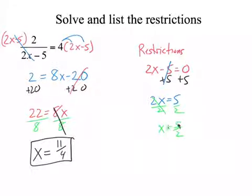5 over 2 is a restriction, meaning it would be error. If this was 5 over 2, it would be an error and we have no answer. But since it does not, the restriction doesn't affect this, we're good. Our answer is 11 fourths. Thank you.